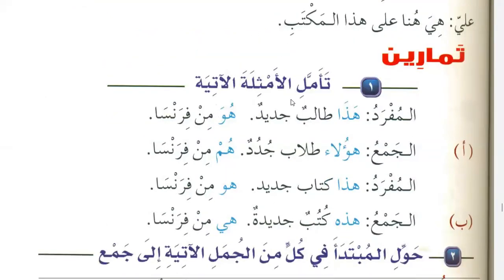Exercises: Observe the following example. Al-mufrad (singular): This is a new student; he is from France. Al-jama' (plural): These are new students; hum min fransa — they are from France. For 'aqil (rational) plural, we use the real plural pronouns hum and haulai.